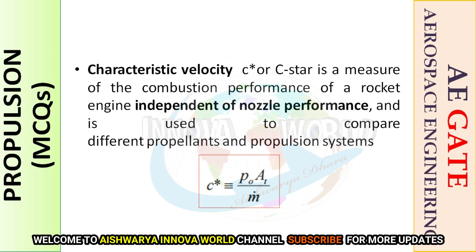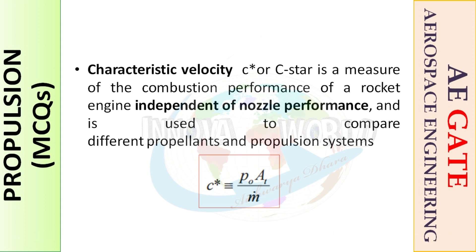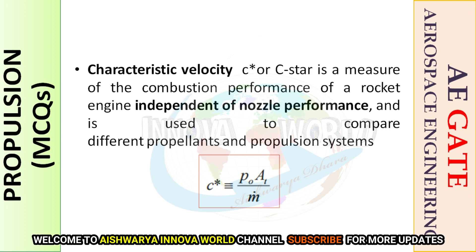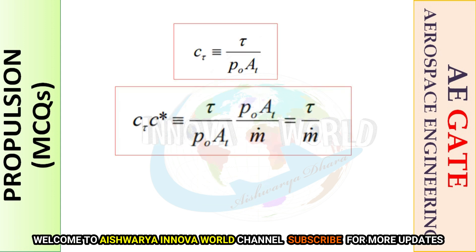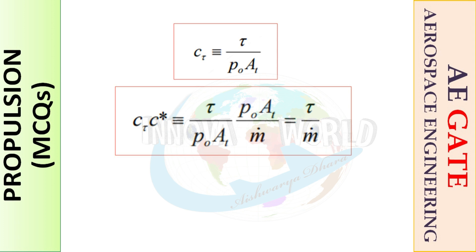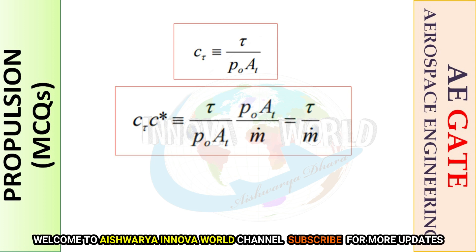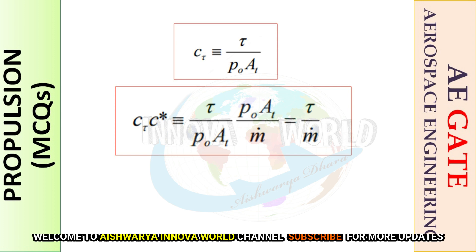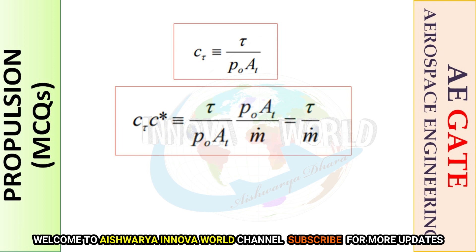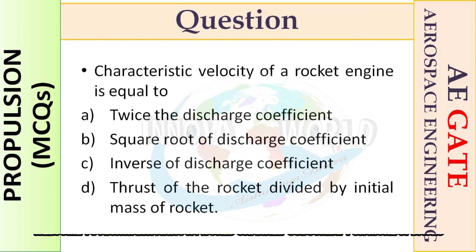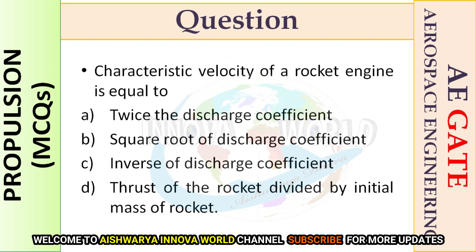The formula for C* can be written as C* = P0 * AT / m-dot. From here we can see that the discharge coefficient is inversely proportional. The thrust coefficient can be defined as thrust divided by P0 * AT. Combining characteristic velocity and the thrust coefficient, we find force divided by m-dot. Therefore, the characteristic velocity of a rocket engine equals the inverse of the discharge coefficient. The right option is option C.